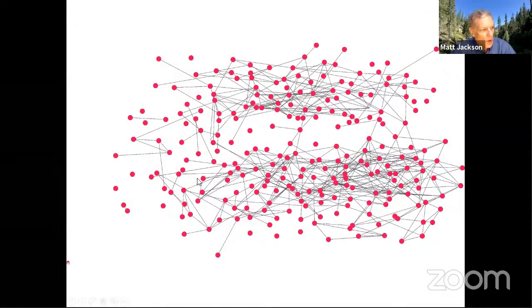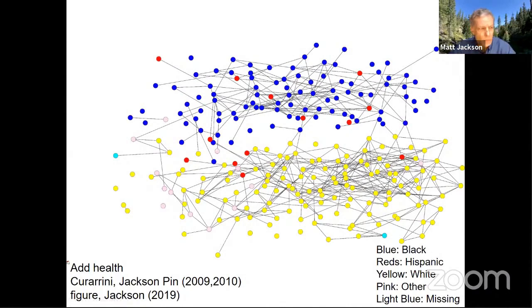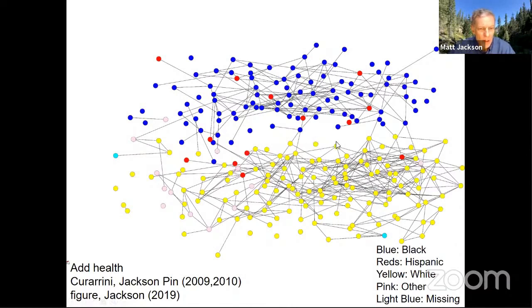You're seeing the segregation and more asymmetry. I'm going to color-code this. This high school is from the AddHealth dataset from a study I did with Sergio Carrini and Paulo Pin about a decade ago. The nodes are color-coded by self-reported race. Out of this high school, there were three main ethnicities: blacks, Hispanics, and whites. The blue nodes are blacks, the yellow nodes are whites, and the red nodes are Hispanic. You can begin to see that the segregation pattern is due to very few friendships between blacks and whites in this high school, even though it's a fairly integrated high school in terms of overall balance.